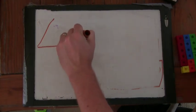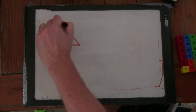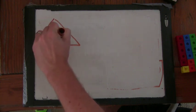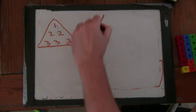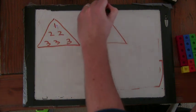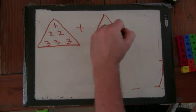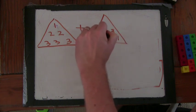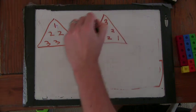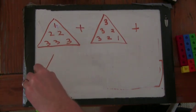He's going to write some triangles, one, two, two, three, three, three, and then what he's going to do is he's going to rotate these triangles, so the one goes down here, two, two, three, three, three.